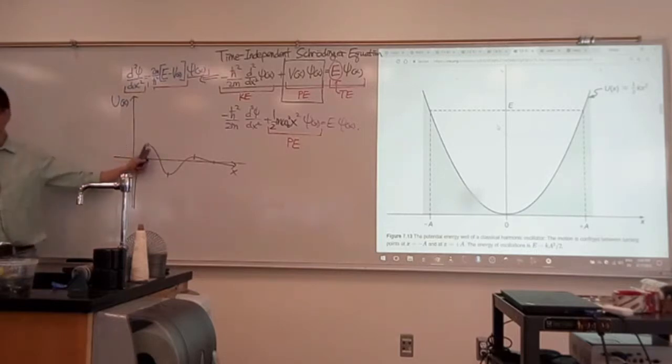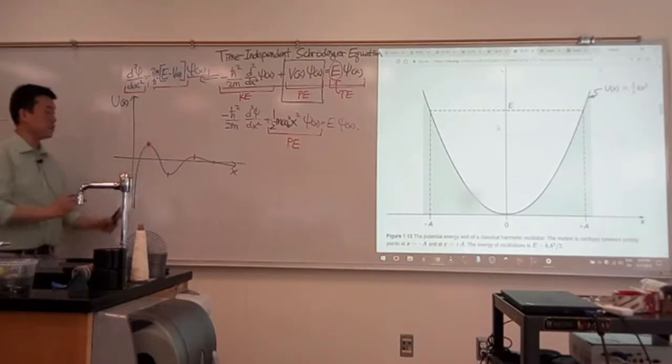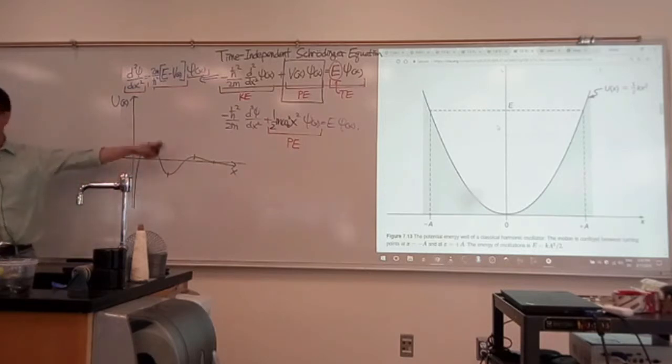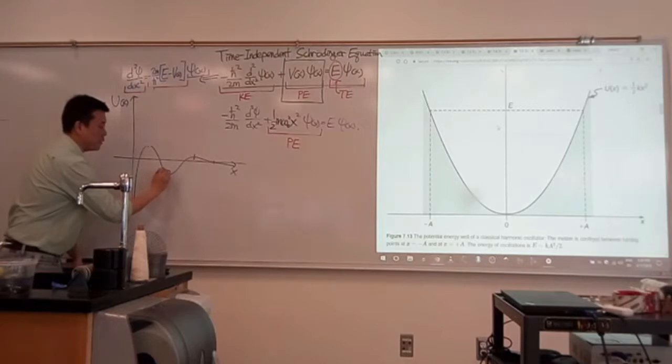So this is an unstable equilibrium, because if a particle is exactly at this position, it will feel zero force. But if it moves a little bit either way, it will roll away. So this is a stable equilibrium.